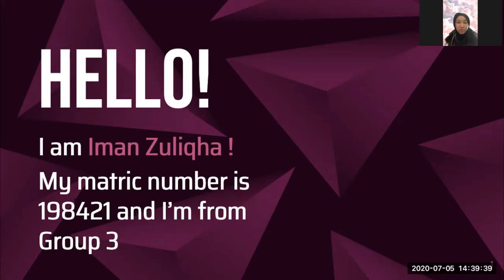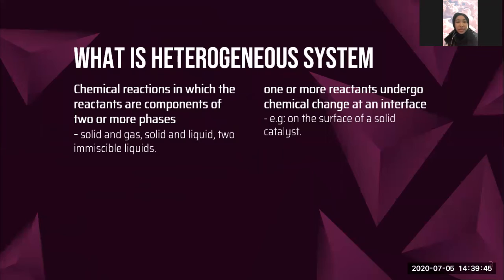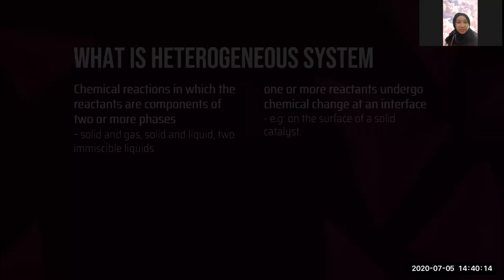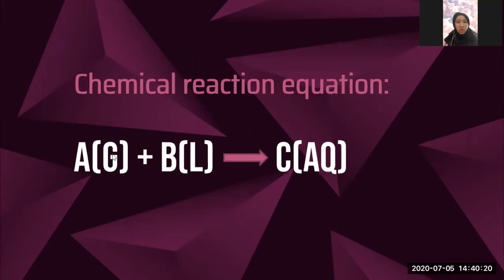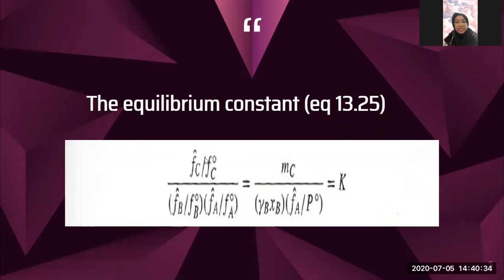Now I will continue with reactions in heterogeneous systems. A heterogeneous system is a chemical reaction in which the reactants are components of two or more phases, such as solid and gas, solid and liquid, or two immiscible liquids. In heterogeneous systems, one or more reactants undergo chemical change at an interface, for example on the surface of a solid catalyst. Consider the reaction: A (gas) + B (liquid) produces C (liquid). The equilibrium constant, equation 13.25, is used to solve problems in heterogeneous systems.